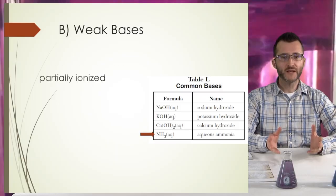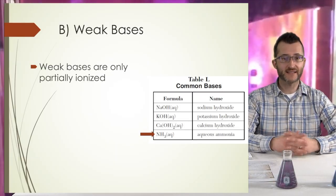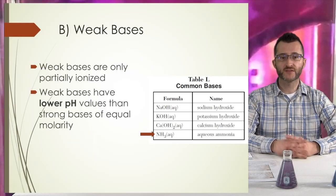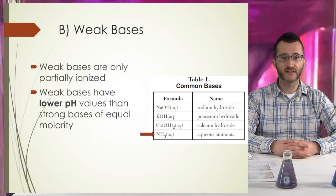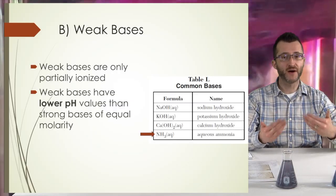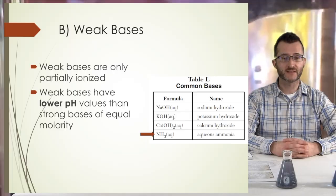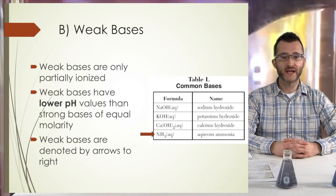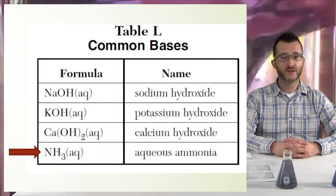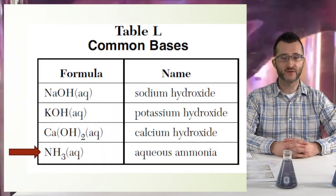Weak bases are only partially ionized, like weak acids, and have lower pH values than strong bases of equal molarity. We're still talking about bases, so the pH is above seven — just lower than strong bases. Weak bases are denoted by arrows to the right. Looking at Table L, we have just one weak base: NH3 aqueous, aqueous ammonia.